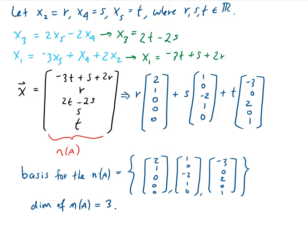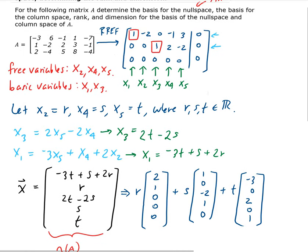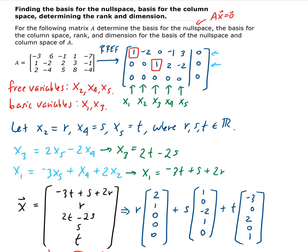Now to find the basis of the column space, we go back to the reduced row echelon form and look at the columns that have the pivots. We have a pivot in column one and a pivot in column three. So we go back to the original matrix and take the first column and the third column — those will be the basis of the column space, based on the spanning set theorem.